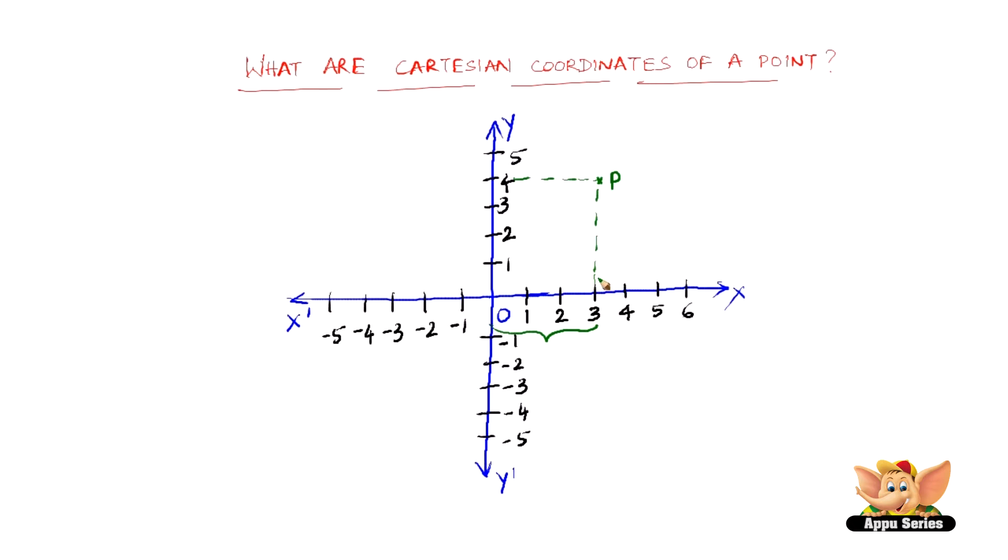Let us name this point as M and this point as N. So OM is called the abscissa and ON is called the ordinate. OM or the abscissa here is 3 units and the ordinate or ON here is 4 units.